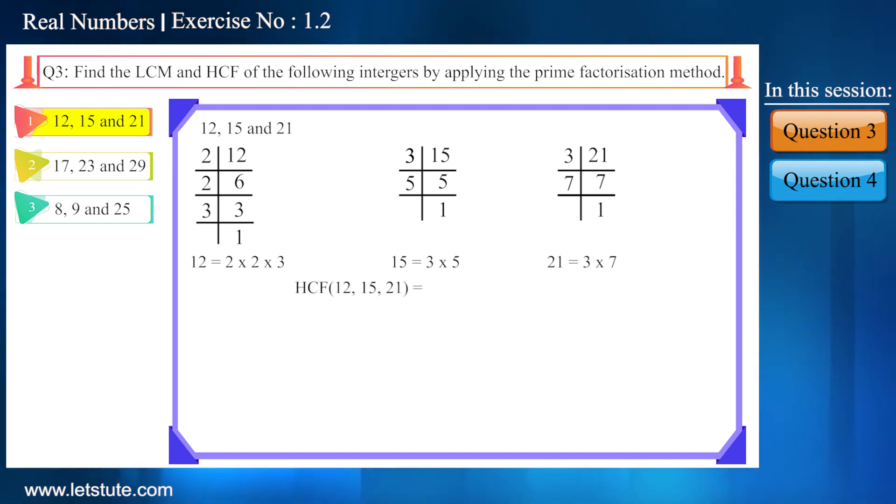Now let's find HCF of these three numbers, for which we will have to find the common number among them. So which number is common? Yes friends, it has 3 as common. Therefore the HCF will be 3.